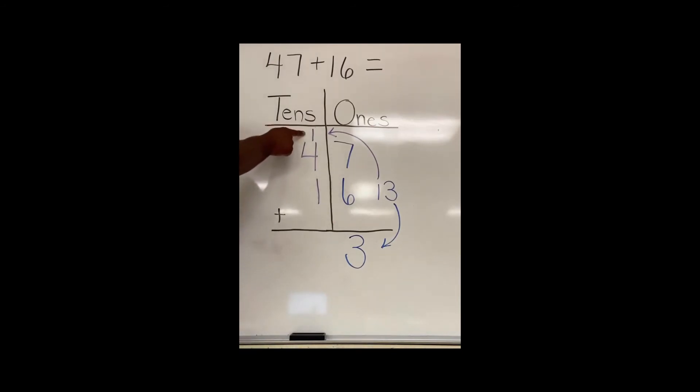So now I have one ten, four ten, and another ten. I'll add all of those together. One ten plus four tens is five tens. Five tens plus one more ten is six tens. Now, I have six tens and three ones. My answer is sixty-three.